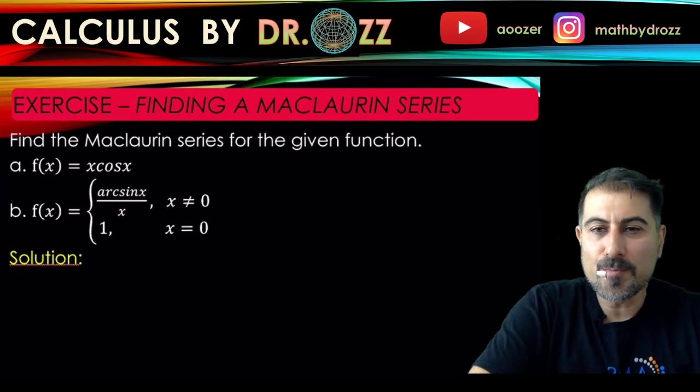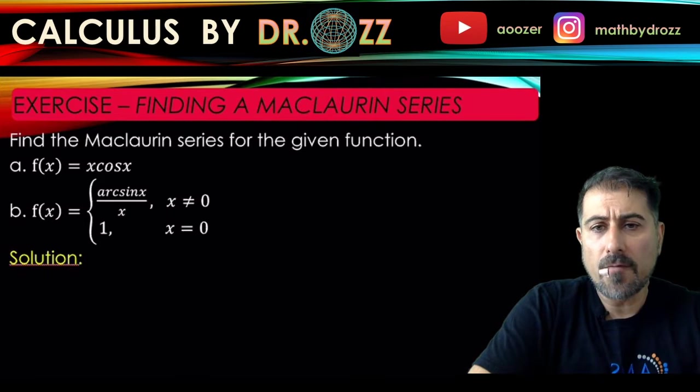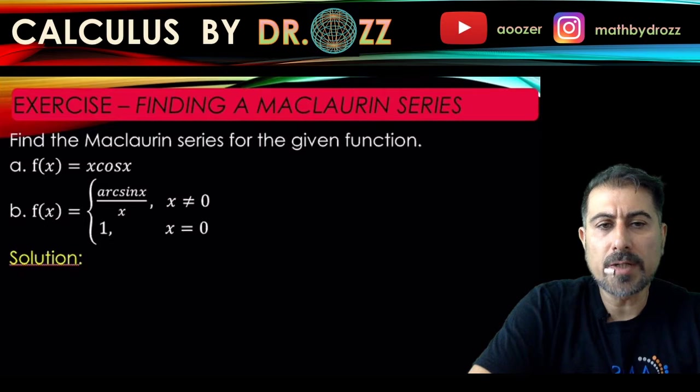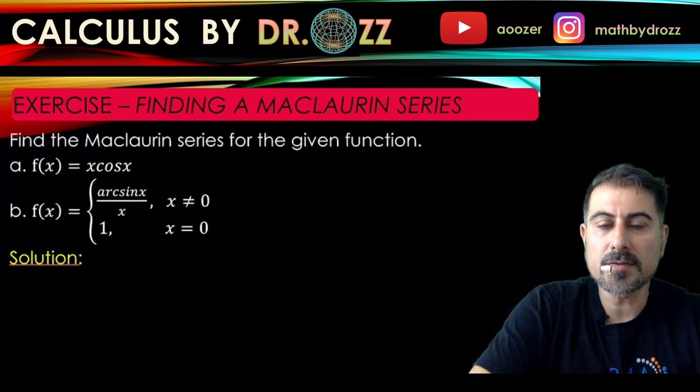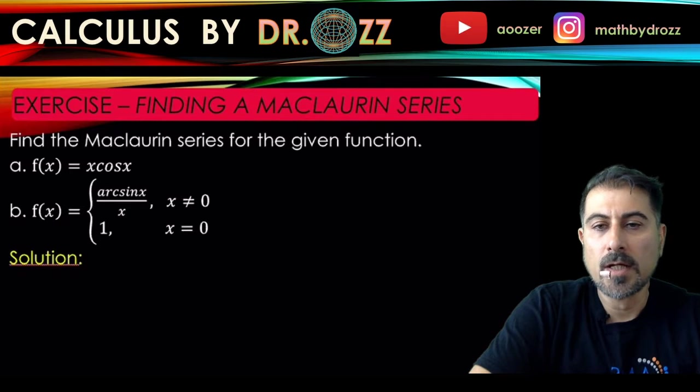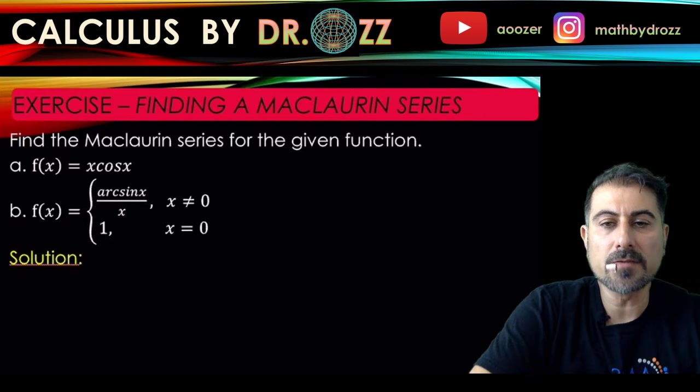In part b we have a piecewise defined function. When x is not equal to 0, it's arcsin(x) over x. That's okay because if x is not 0, the bottom is not 0 anymore, so you don't have a 0 over 0 type indeterminate form.